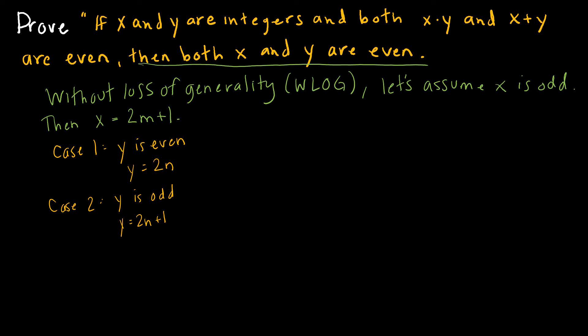If y is even let's look at x plus y which would be 2m plus 1 plus y which is 2n. I can rewrite this as 2 times m plus n plus 1 and this is odd and so I've shown that it's odd and I can continue on to case 2.